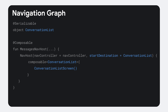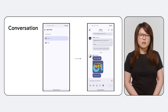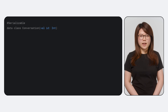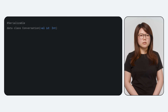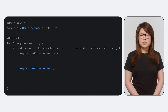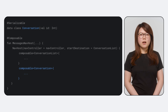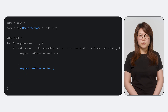But what if you want to show a particular conversation? For example, the user wants to click on an item in the list and open up the actual conversation. To support that, let's define a second route called Conversation, and this route contains an integer argument called id. This argument is the conversation id that can be used to load a specific conversation from the data source. As with the first destination, we'll call composable to add a second destination and set up Conversation as its unique route.